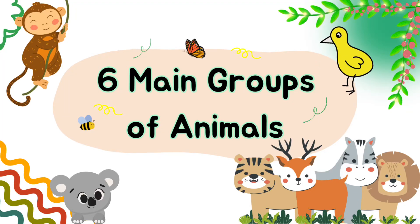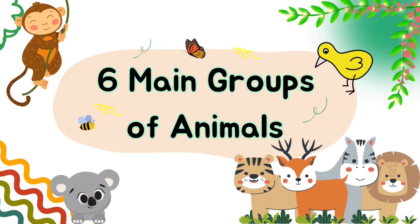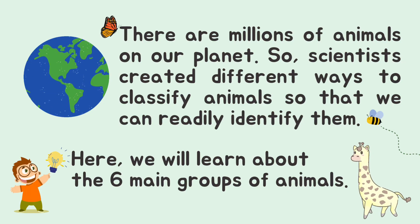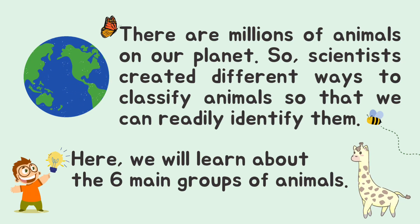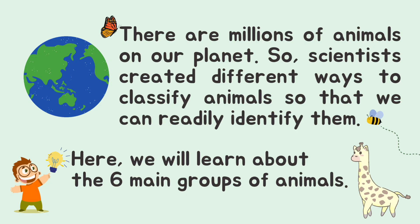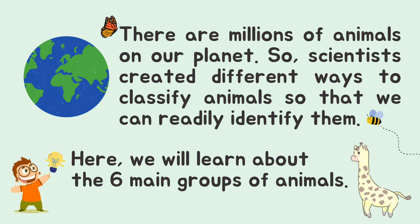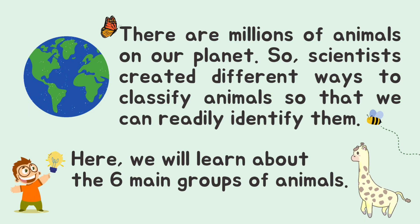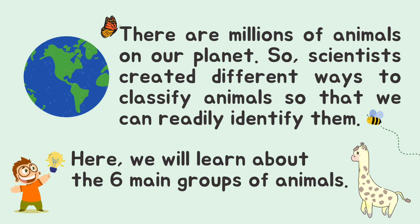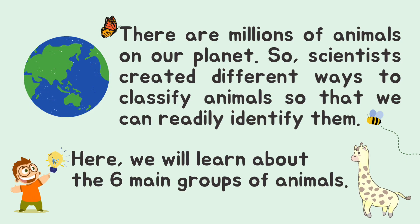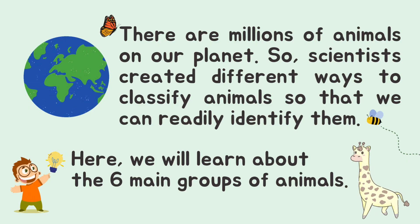Today, let's learn about the six main groups of animals. Let's go! There are millions of animals on our planet, so scientists created different ways to classify animals so that we can readily identify them. Here, we will learn about the six main groups of animals.